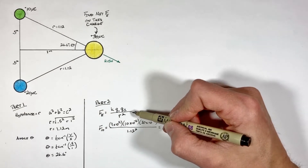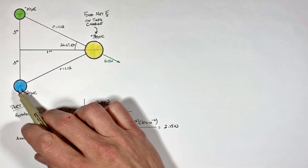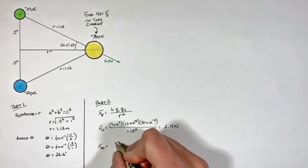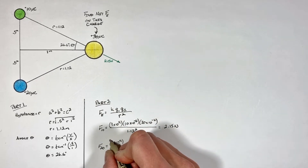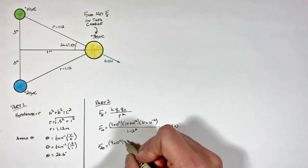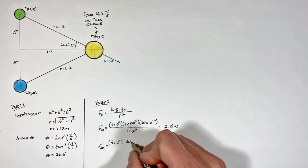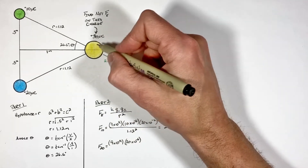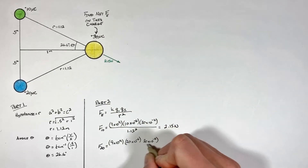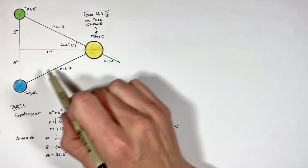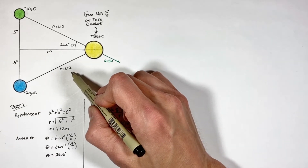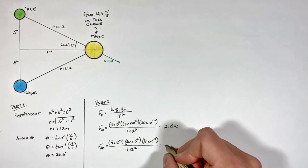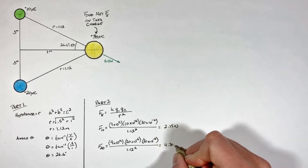Next we apply Coulomb's law to find the force by the second charge on our 30 microcoulomb charge. Again we have Coulomb's constant, this time multiplied by 20 times 10 to the negative 6th coulombs, multiplied by our 30 microcoulomb charge, and again the distance between these two charges is 1.12 meters. This works out to be 4.30 newtons.